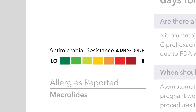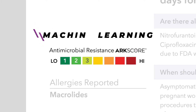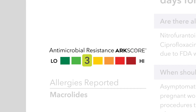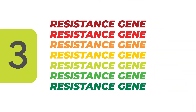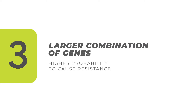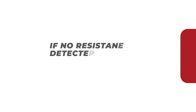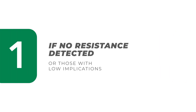Next is the Antimicrobial Resistance Arc Score. Our advanced AI and machine learning analysis assigns a single-digit score to give physicians an aerial view of what resistance genes were detected and how those resistance genes impact clinical decision making. When more resistance genes are detected, or a larger combination of genes with a higher probability to cause resistance, this arc score will be higher. If there are no resistance genes detected or those with low implications, the arc score will be lower.